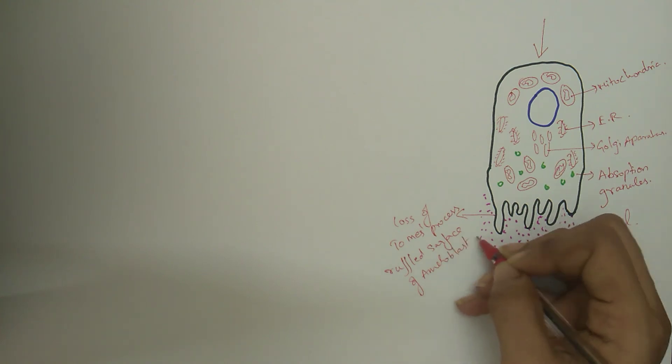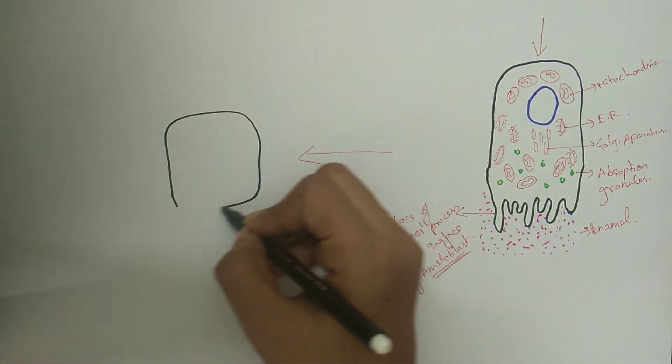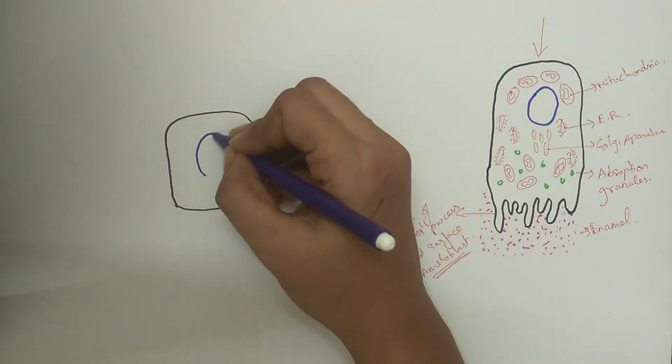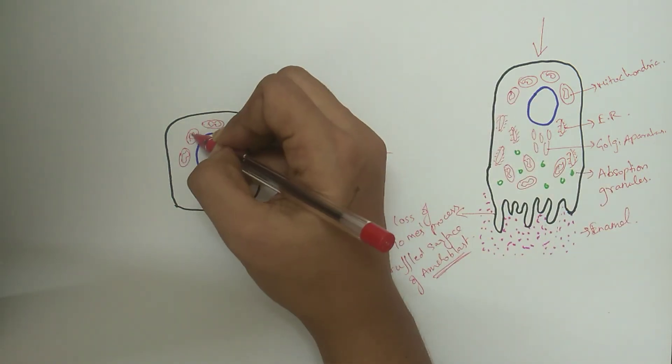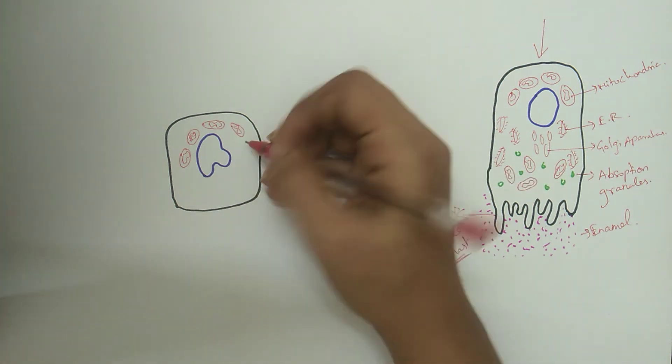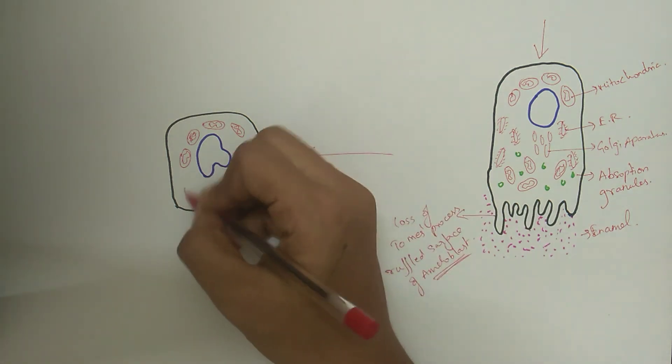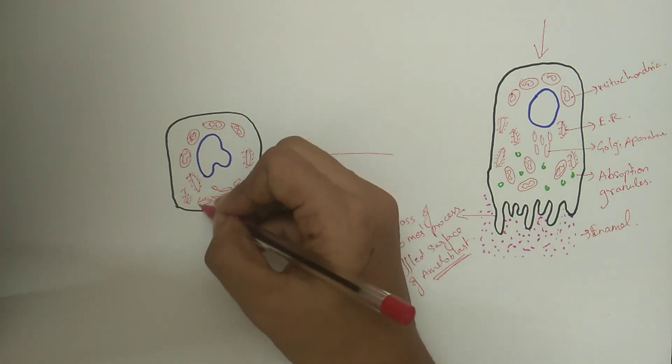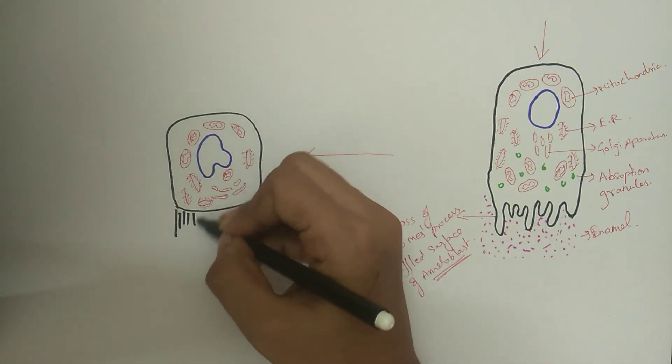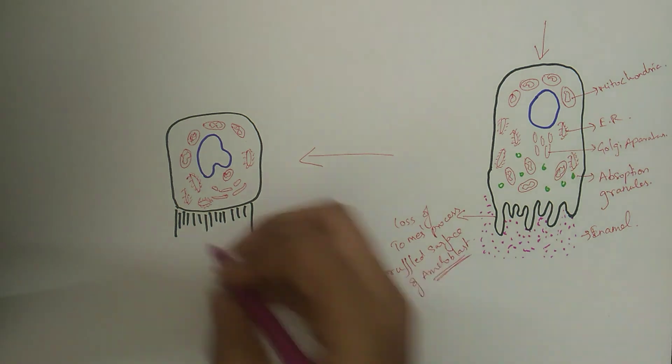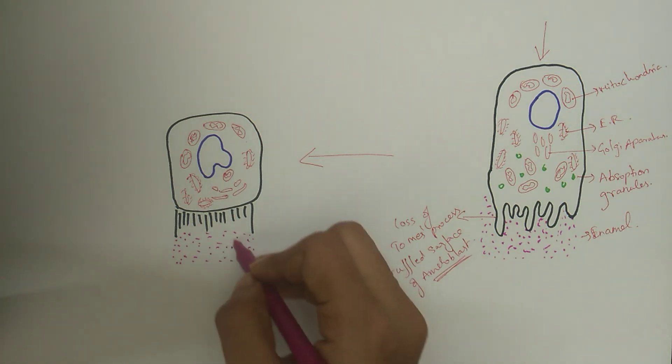This is followed by the protective stage, where after the enamel has completely calcified, the ameloblasts lose their columnar shape and become cuboidal. They become indistinguishable from the cells of the outer enamel epithelium. These cell layers form the epithelial covering of the enamel called reduced enamel epithelium. The reduced enamel epithelium protects the surface of the matured enamel from the connective tissue of the follicle till the eruption of the tooth.